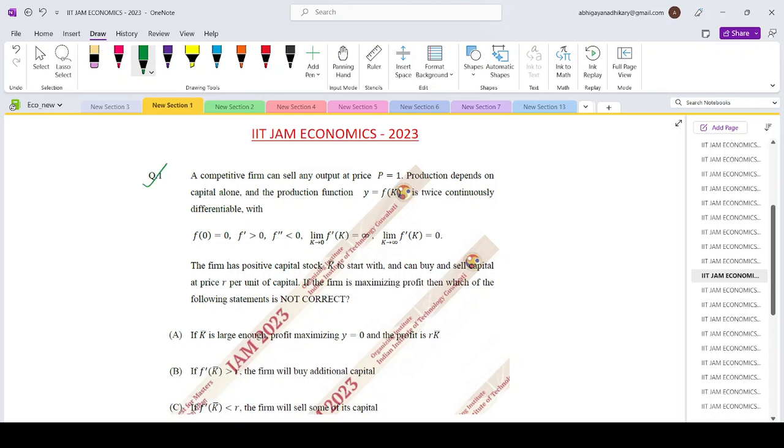A competitive firm can sell any output at price P equals 1. The production only depends on capital alone so Y equals FK, twice continuously differentiable with these conditions. The firm has a positive capital stock K bar to start with and can buy and sell capital at price R per unit. If the firm is maximizing profit, then which of the following is not correct?